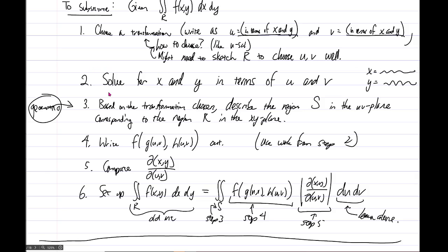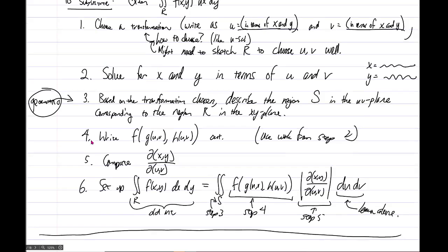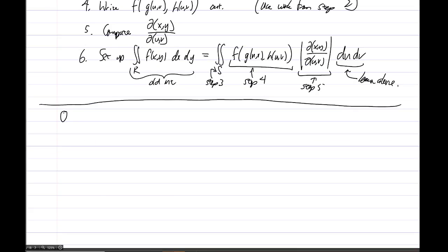Okay, so for this next part, we're going to do an example. I left the steps up here so we can scroll up to that if we need to for reference. So I'd like to rewrite the integral from 0 to 4, integral y over 2 all the way up to y over 2 plus 1, of the function 2x minus y over 2 dx dy.